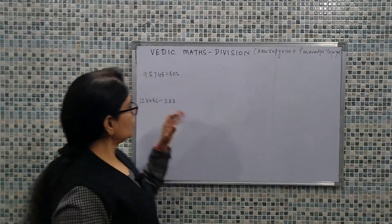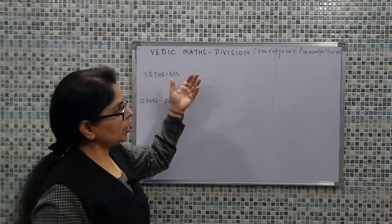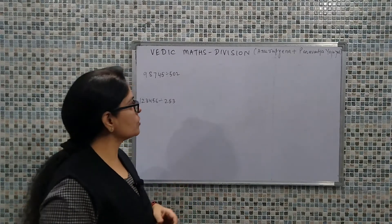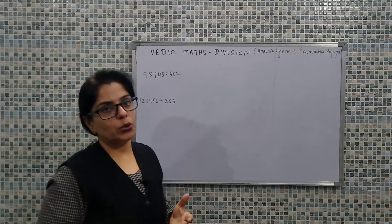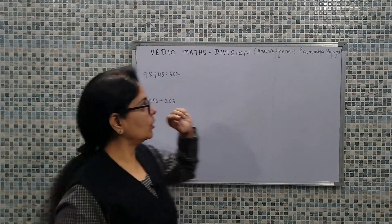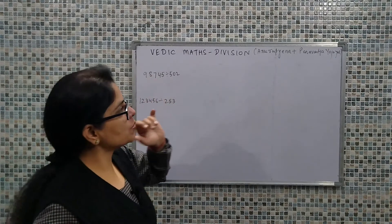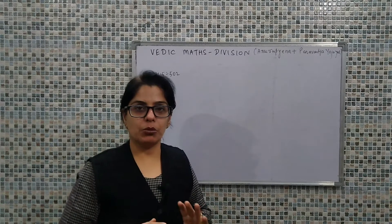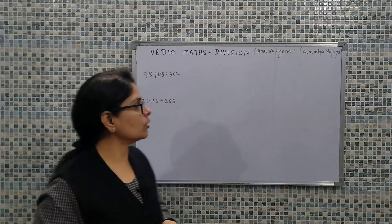Now let's understand in this particular question how we can use Anurupyena and Paravartya Yojiyat for simplification. One thing I need to note: when we apply these sutras, all calculations are applied only to the divisor. The dividend is not disturbed in any way.